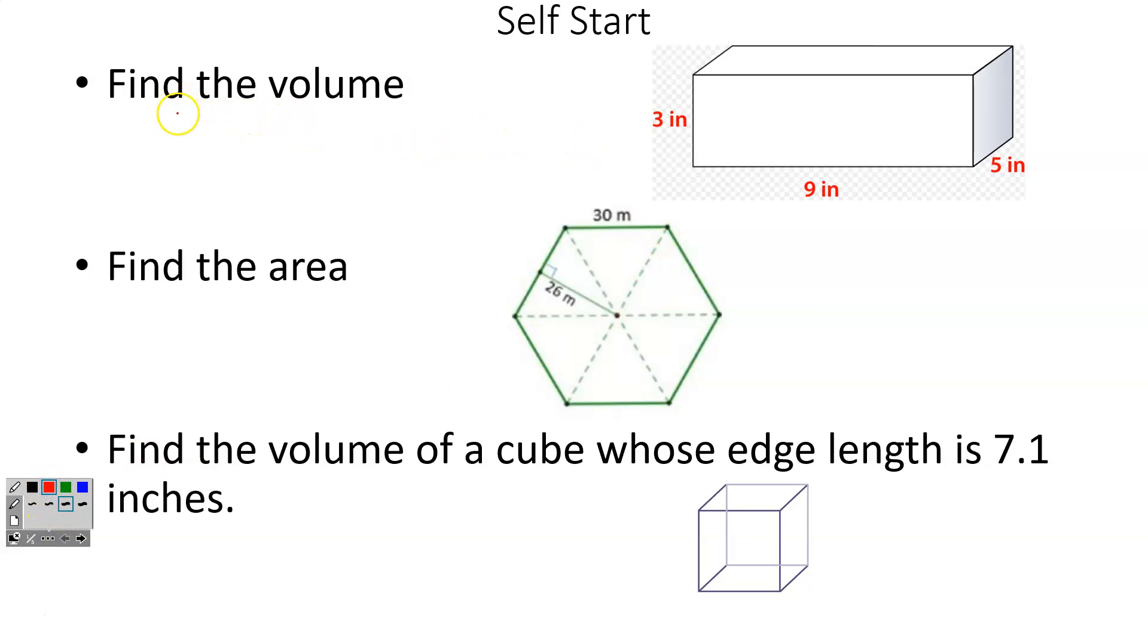First thing, question number one on your self-start is find the volume. So to find volume of a rectangular prism, it's length times width times height. So I'm going to do 9 times 5 times 3. That gives me an answer of 135 inches. And remember volume is always cubed, so it's going to be cubed.